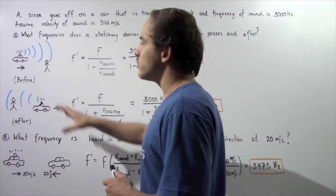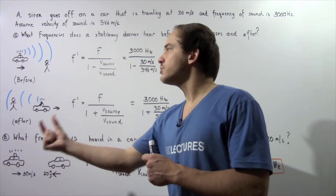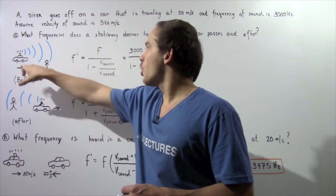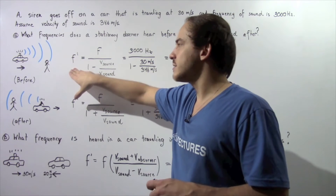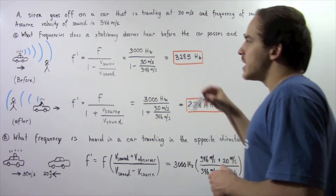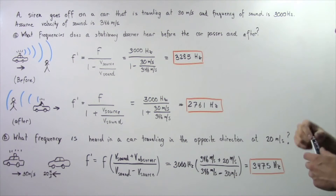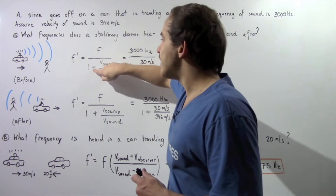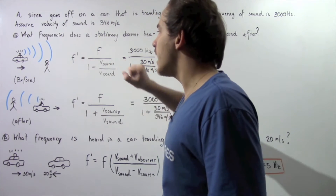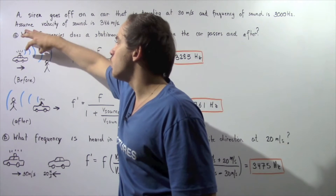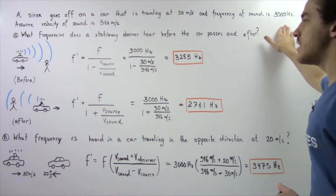Let's begin with part A, case number one: the car is traveling toward the stationary observer. We're going to use the Doppler equation to determine the frequency observed. F prime equals the original frequency of 3000 hertz, divided by 1 minus the source velocity over sound velocity, using a negative sign because the car is approaching — so the wavelength will be less and the frequency will be greater than 3000 hertz.